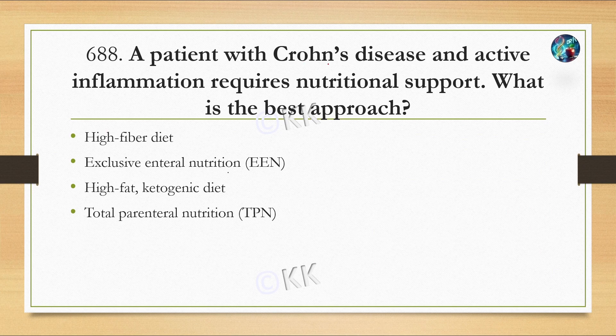Next question: a patient with Crohn's disease and active inflammation requires nutritional support. What is the best approach? Option A: high fiber diet. Option B: exclusive enteral nutrition. Option C: high fat ketogenic diet. Option D: total parenteral nutrition.